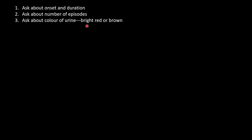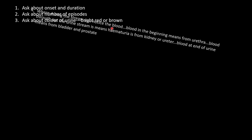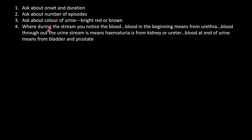We will ask about the color of the urine — whether it is bright red or brown. Importantly, we ask when during the stream the blood appears: if it comes at the beginning, it is usually a urethral source; if it is mixed throughout the stream, it is mostly from the kidney or ureter; and if it comes at the end, it is mostly from the bladder or prostate.